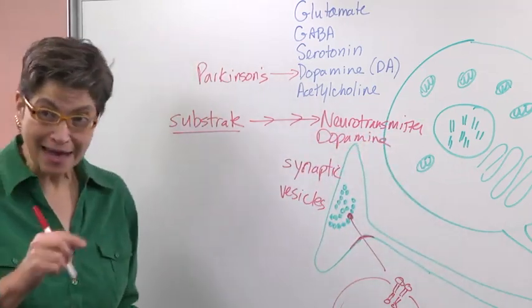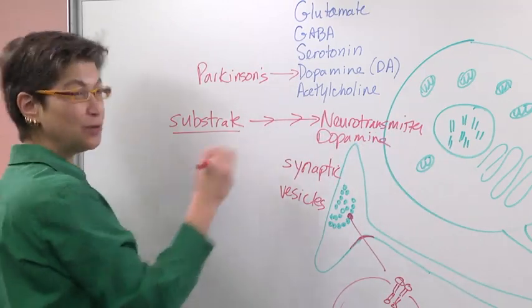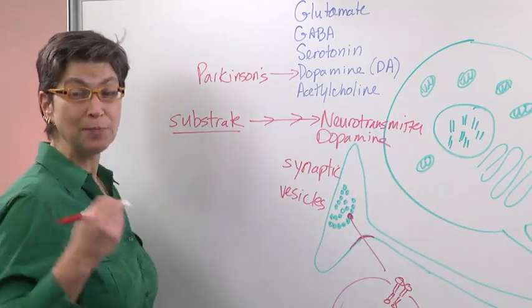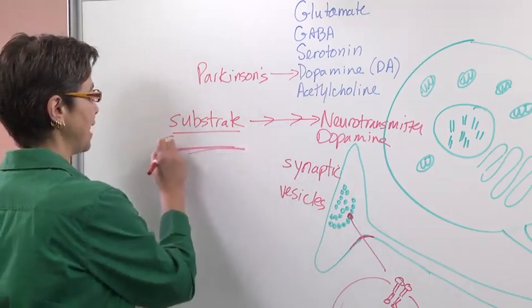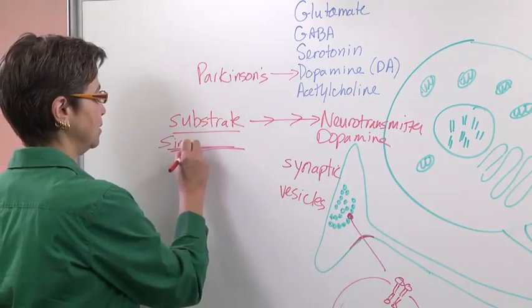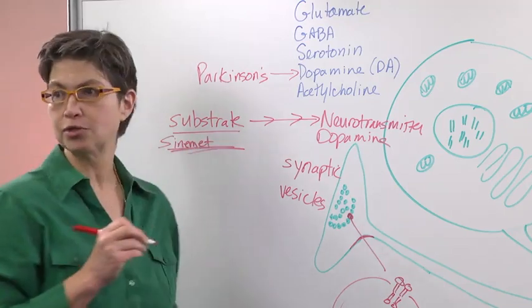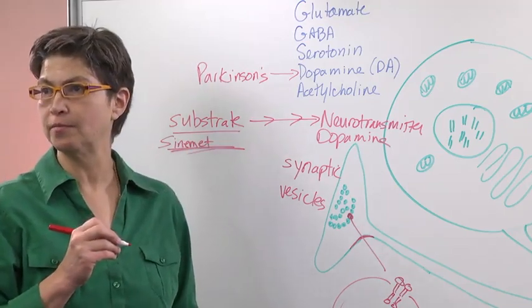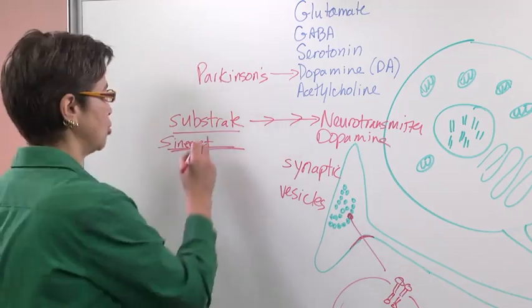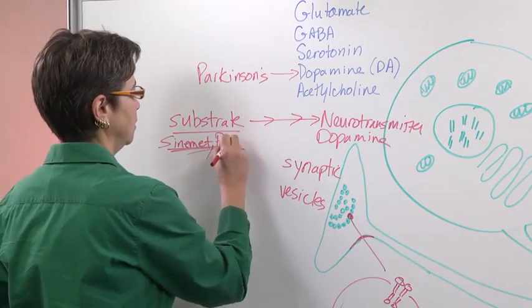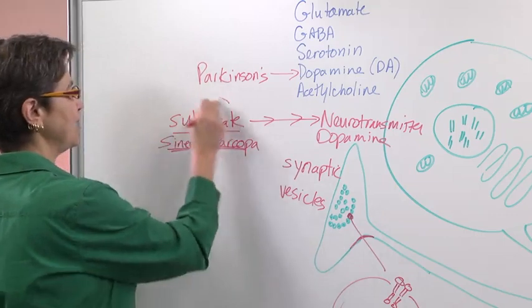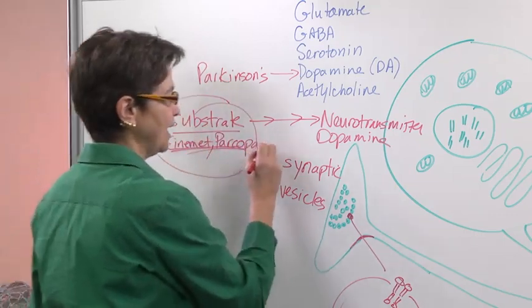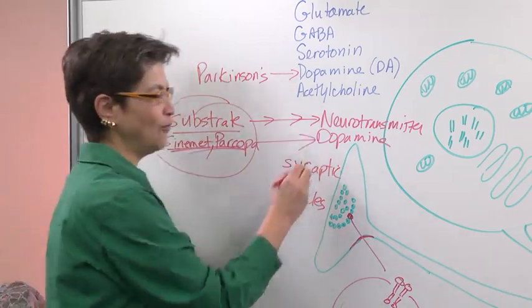...in Parkinson's, there's a lack of dopamine. So what do we do to treat that? In most people with Parkinson's, we give them the substrate. That is what Sinemet is—which is also in other countries called Parkopa. These are drugs that provide a lot of this substrate.